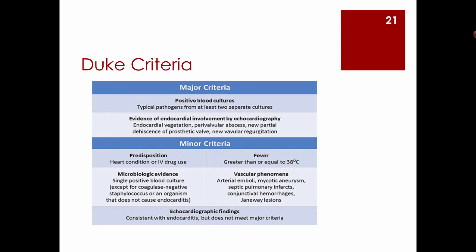The diagnosis of endocarditis is challenging, so the Duke Criteria were developed. Physical findings like Janeway lesions and Osler's nodes are actually poor predictors. What really matters are the two major criteria: positive blood cultures and echocardiographic evidence of endocardial involvement. If both major criteria are present, you have endocarditis. Minor criteria make the picture more complicated.